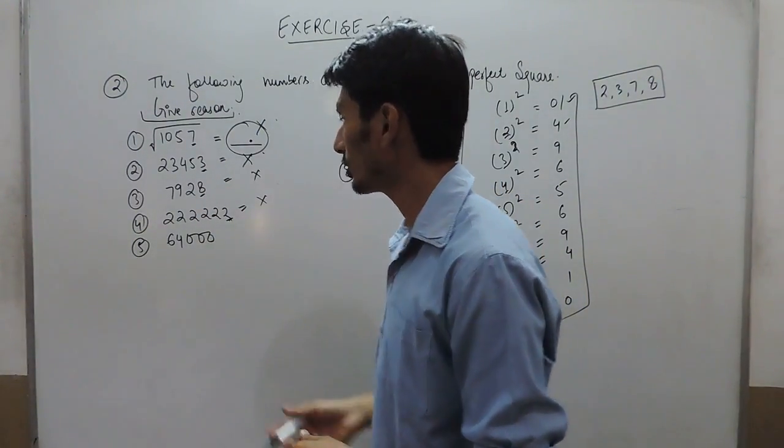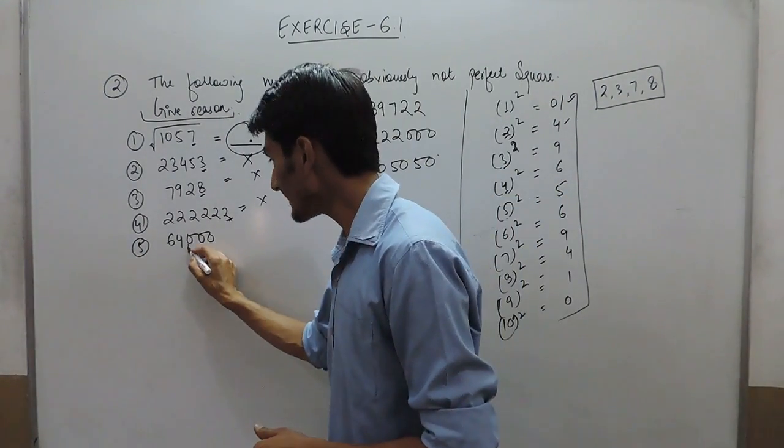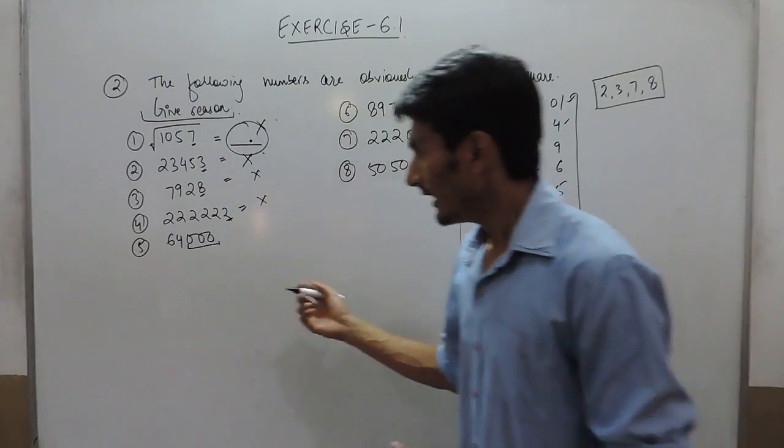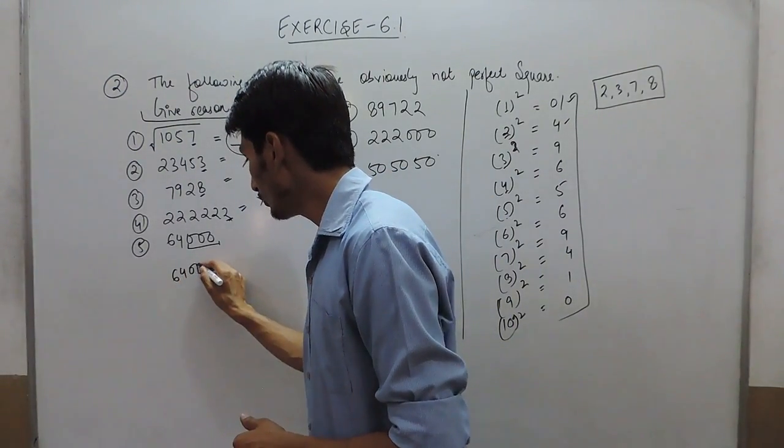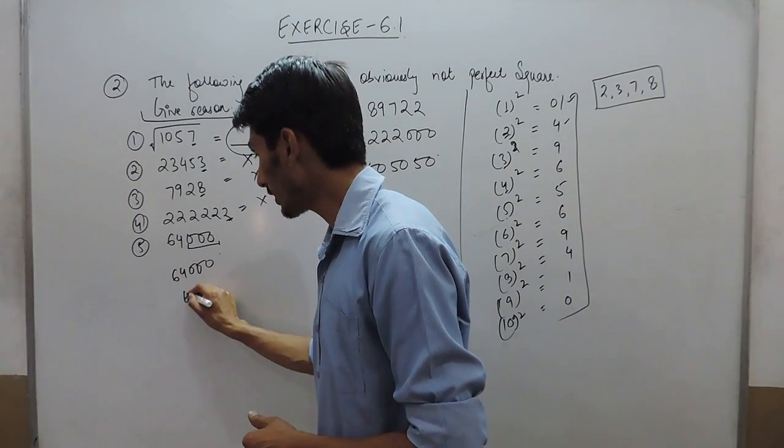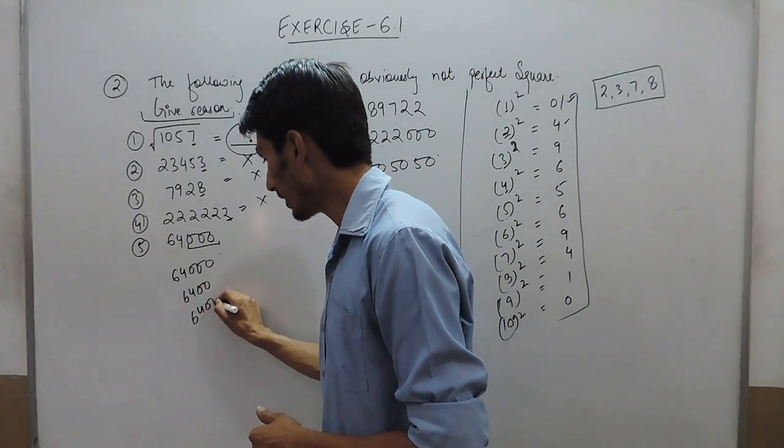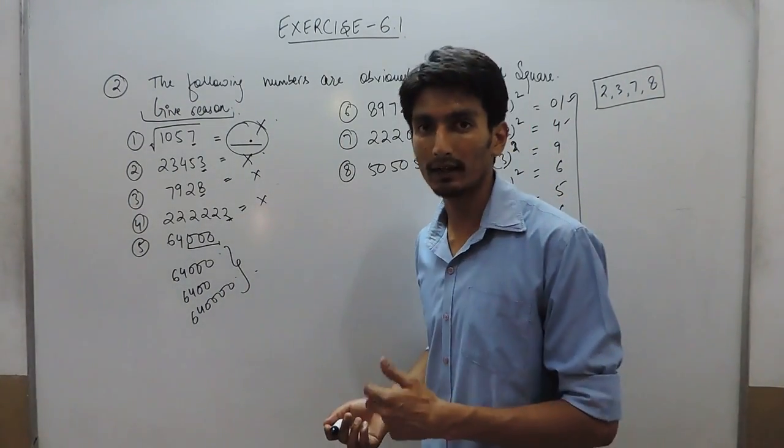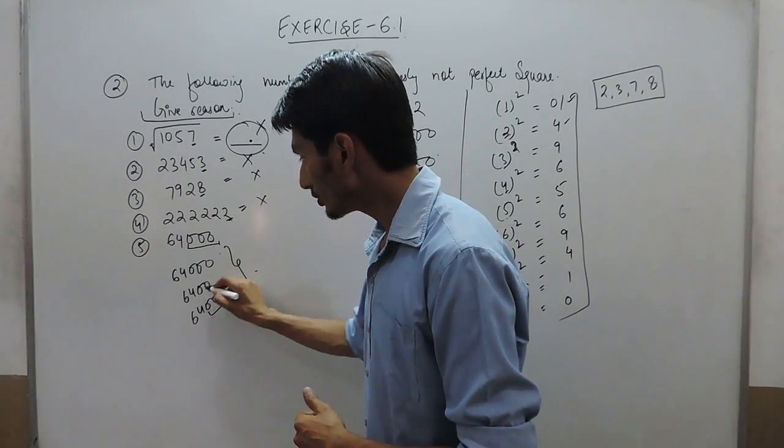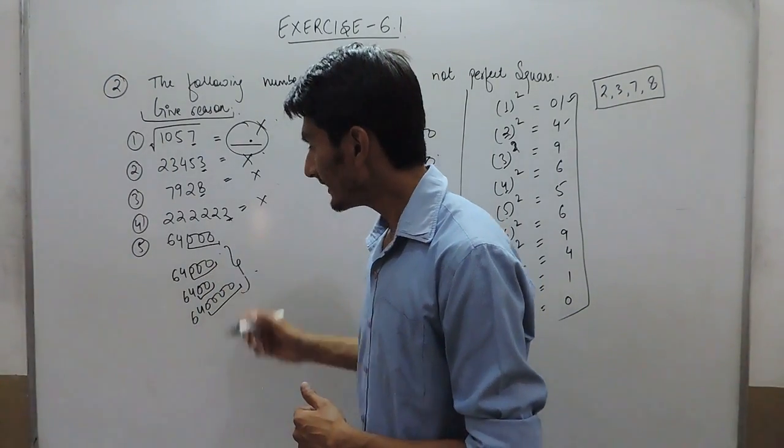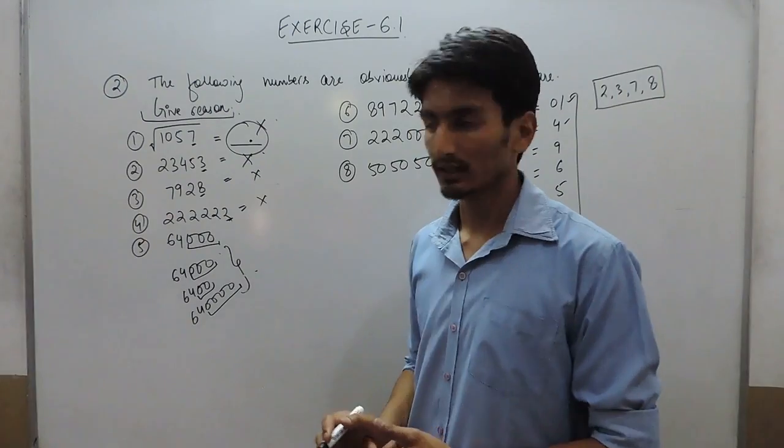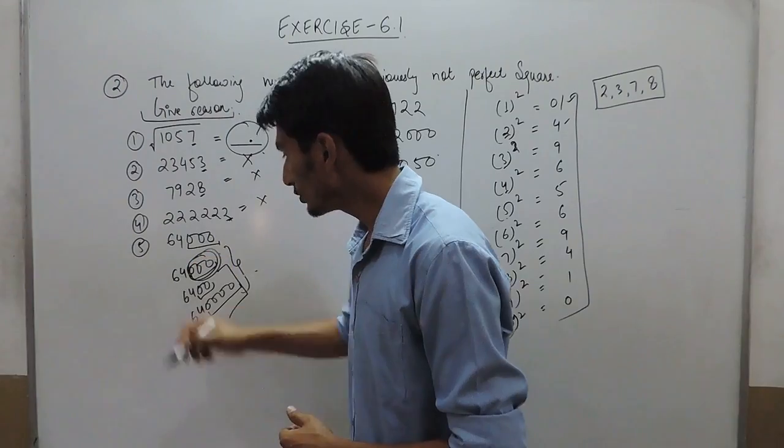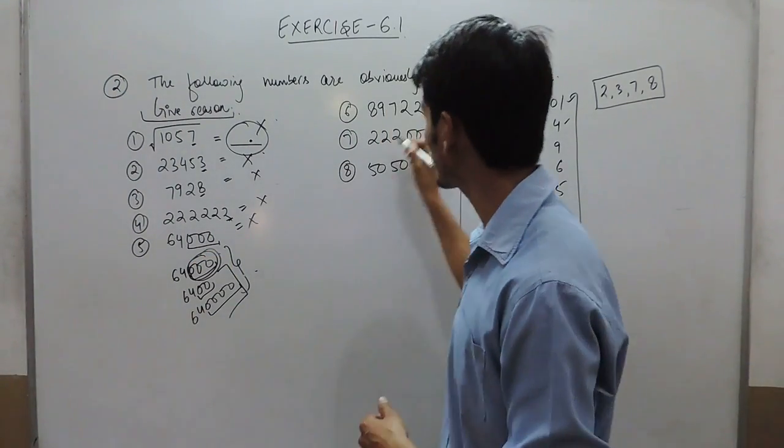In the case of zeros at the end, we must have 2 zeros, or 4 zeros, or 6 zeros to have a perfect square number. Means, you must have an even number of zeros in the last digits. You cannot have an odd number of zeros to have a perfect square.